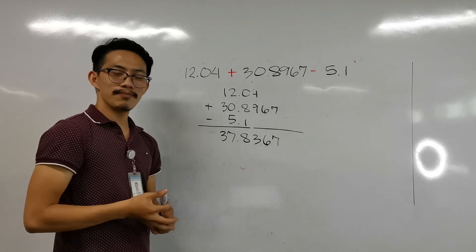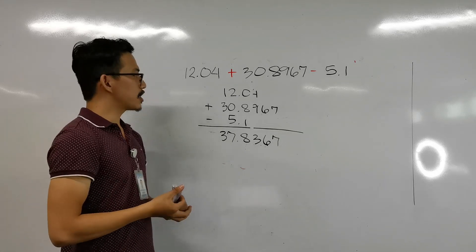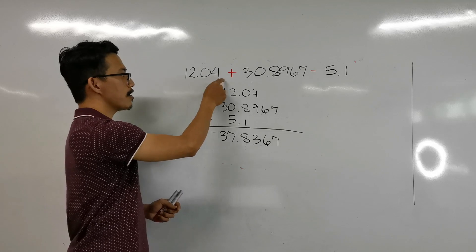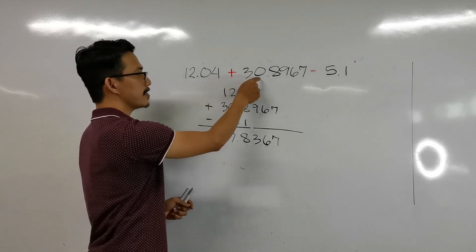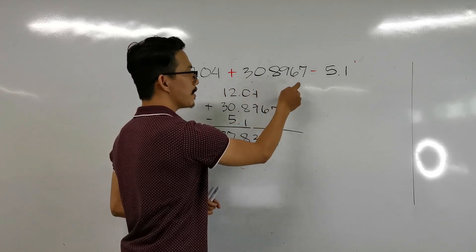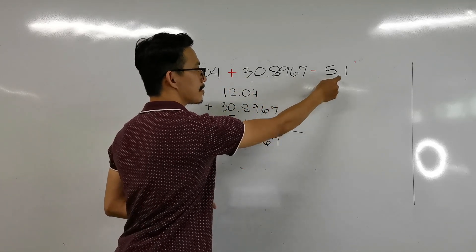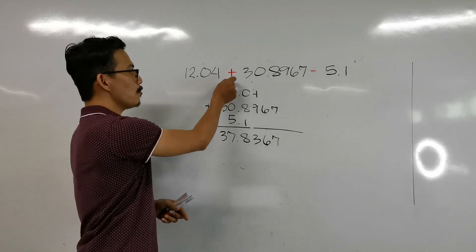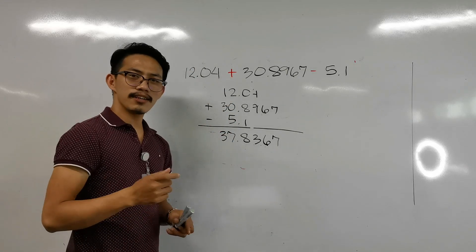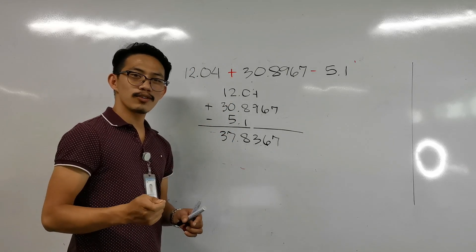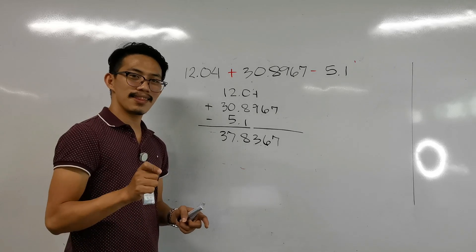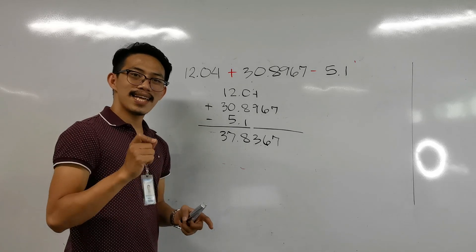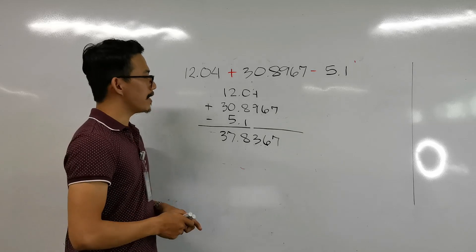Here is how we solve problems regarding addition and subtraction. We have 12.04 plus 30.8967 minus 5.1. Since we only have addition and subtraction, there is only one rule, and that is to follow the least precise measurement.